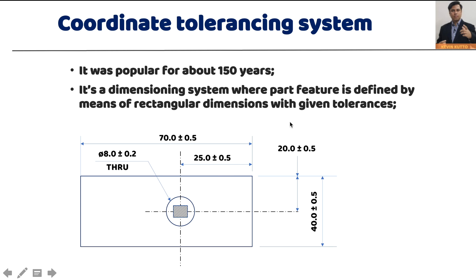The tolerance zone we get is a square one because both tolerances are equal. If the tolerances are not equal, we get a rectangular zone. This system is very simple — any person who knows how to read numbers can read this drawing. So then what was the need to move to Geometric Dimensioning and Tolerancing?